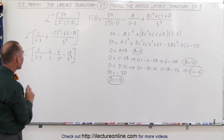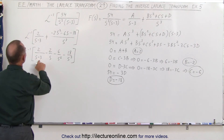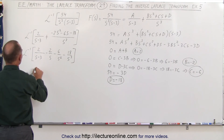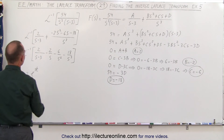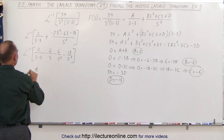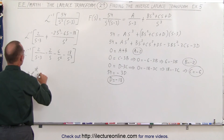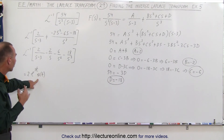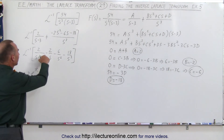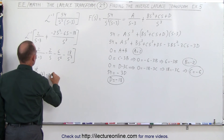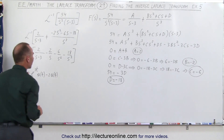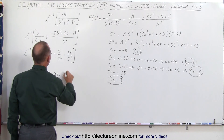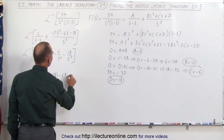We're ready to take the inverse Laplace transform, but we have to be careful. On the first term we have s minus 3, which means we get e to the 3t power times 2 — so that's 2 times e to the 3t times u of t. The unit step function u of t equals 1 when t is greater than 0. Next we get minus 2 u of t.